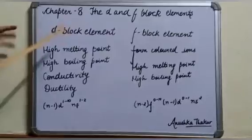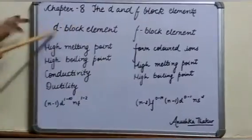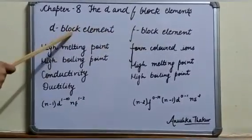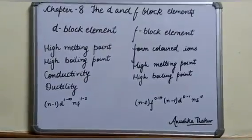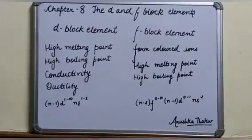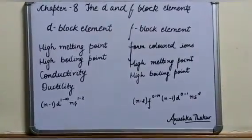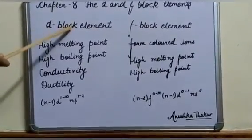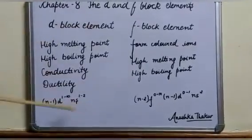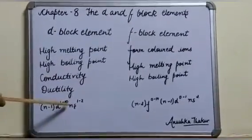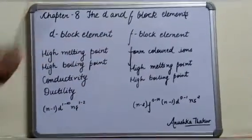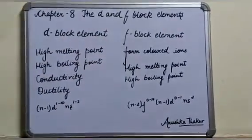This chapter is divided into two parts: d-block elements and f-block elements. D-block elements are known as transition elements, and f-block elements are known as inner transition elements. There are lanthanoids and actinoids also. The electronic configuration of d-block elements is (n-1)d¹⁻¹⁰ ns¹⁻².